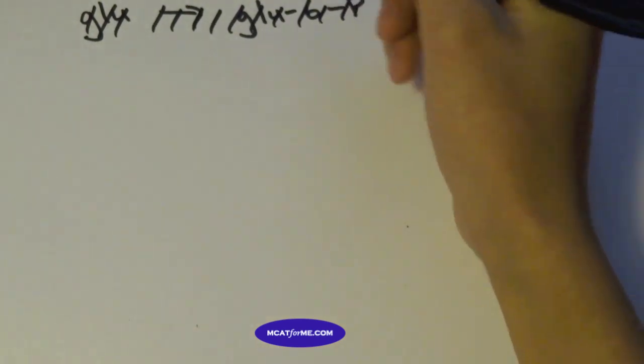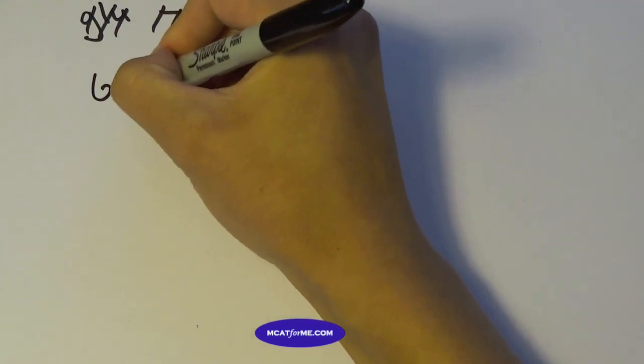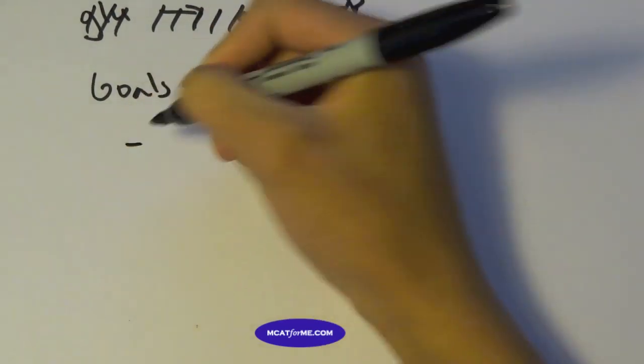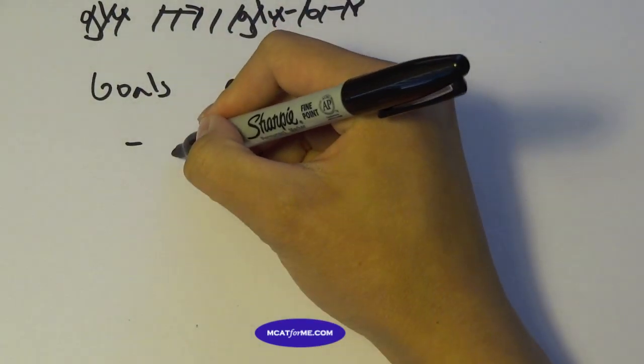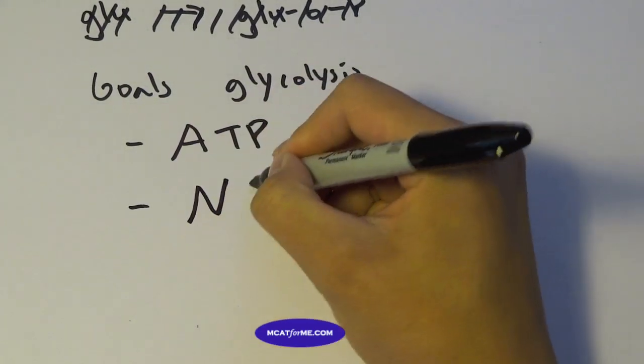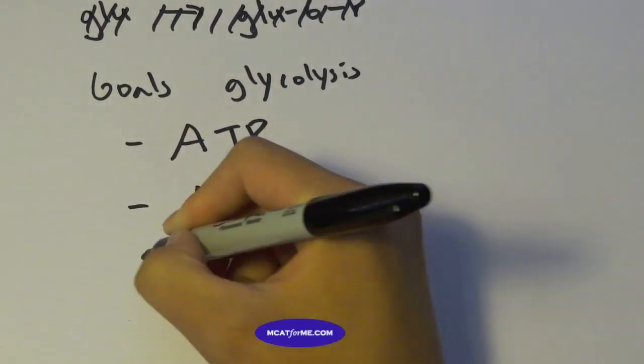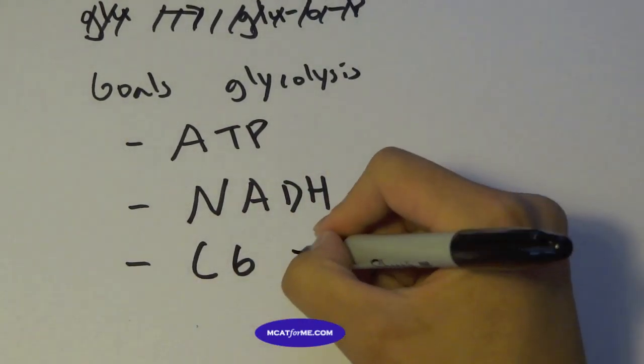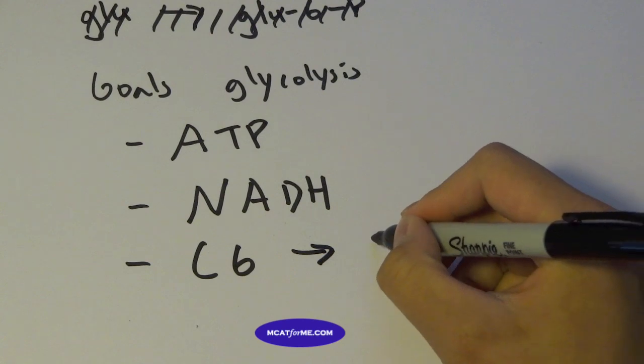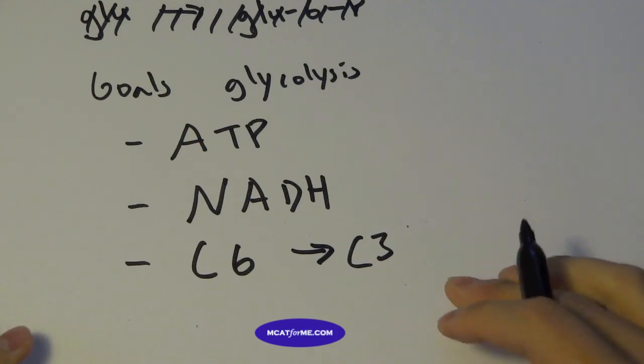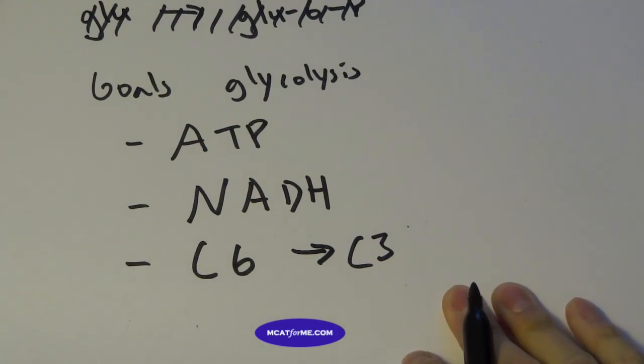let's talk about the goals of glycolysis. Why do we even want to do glycolysis? Well, the reason is for three reasons. One, we want to form ATP. Two, we want to form NADH. And three, we want to convert our very large glucose molecule down into a very small 3-carbon intermediate. And that can be used for different processes. And we'll see why and what actually these will become.